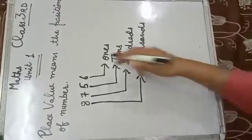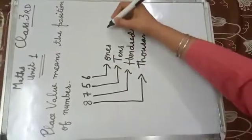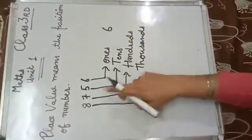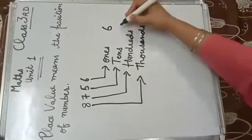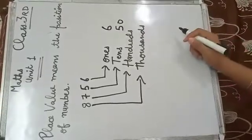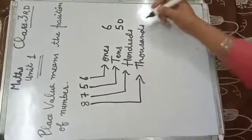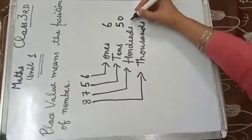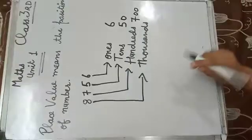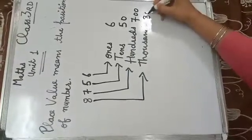So the place value of 6 is 6. Place value of 5 is 50. 7 is on the hundreds place, so the place value of 7 is 700. Place value of 8 is 8000.